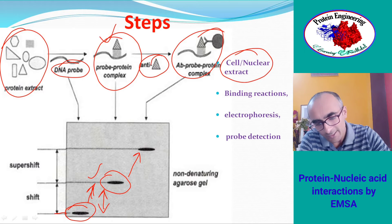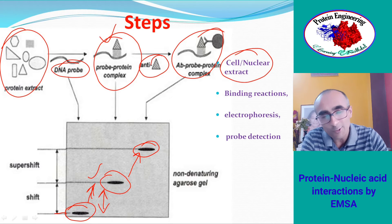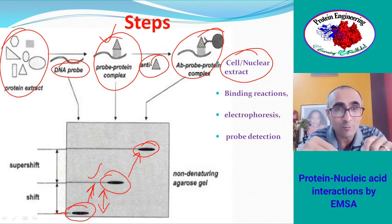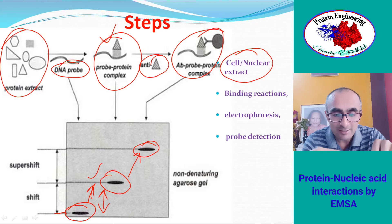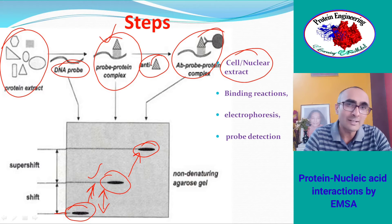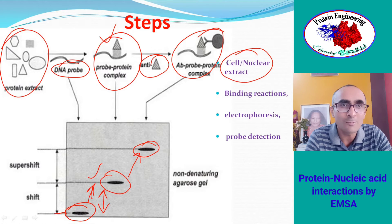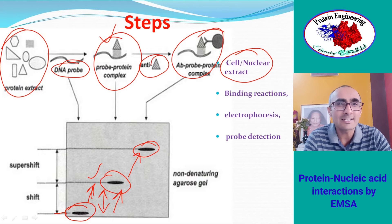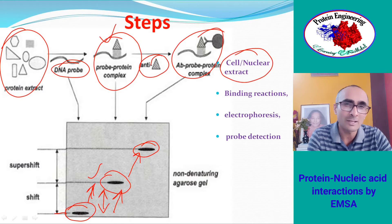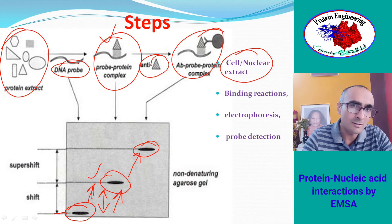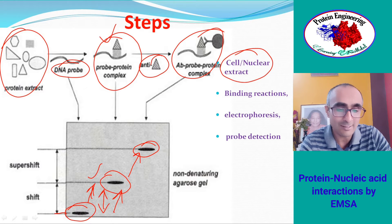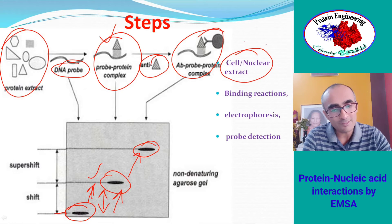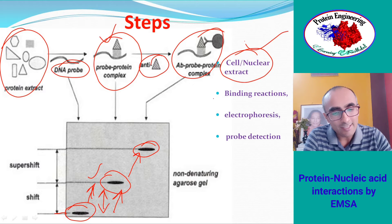Remember, these bands correspond only to the probe, because you have labeled only the DNA sequence. So you are detecting only the probe — not the protein or the antibody. You observe how the probe is being shifted to a high molecular weight complex, which simply means it is binding to something. That is why the molecular complex becomes larger and retards the movement of the complex in the gel under native conditions.